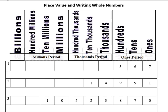We talk about periods and group things together. The first period is ones, then thousands, millions, billions, trillions, and so forth. When we write the numbers, we put a comma to separate the periods, and that makes it easier to read.